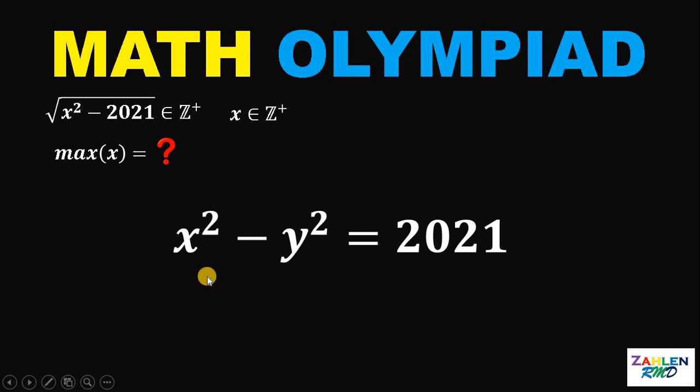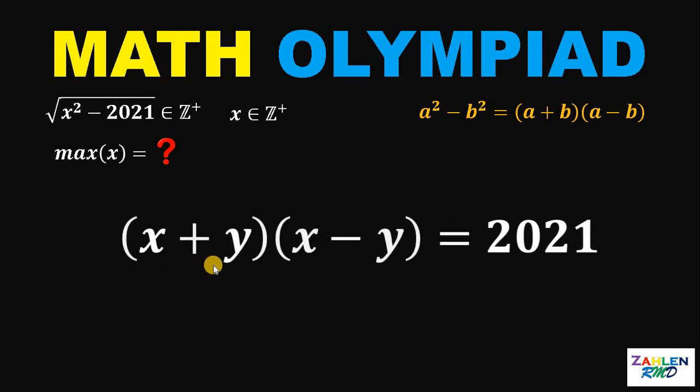A square number minus another square number. Notice that we can use the difference of two squares because a squared minus b squared is equivalent to a plus b multiplied by a minus b. Therefore, this x squared minus y squared can be written as x plus y multiplied by x minus y.